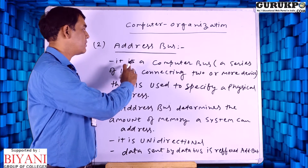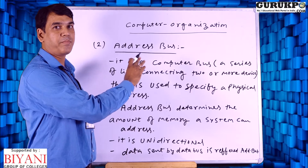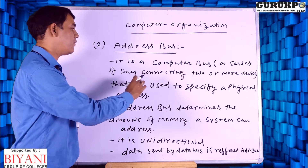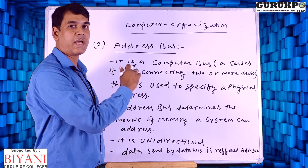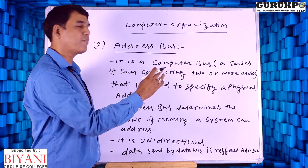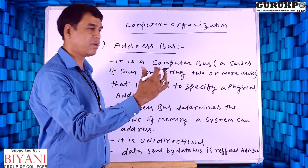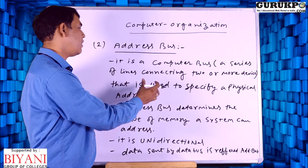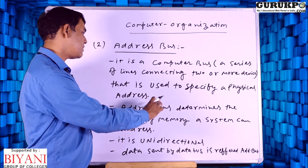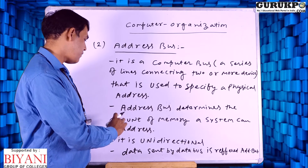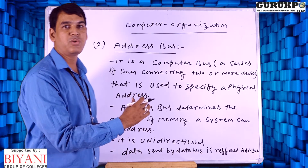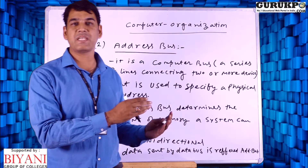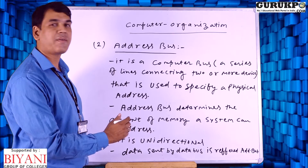Let us discuss about the address bus. The address bus is a computer bus which defines some part of an address or defines some locations for devices. We have different kinds of physical addresses as well as some IP addresses. Physical addresses denote particular devices and how they can communicate with each other. The address bus determines the amount of memory a system can address, and it is unidirectional, meaning it transfers data in one direction only.